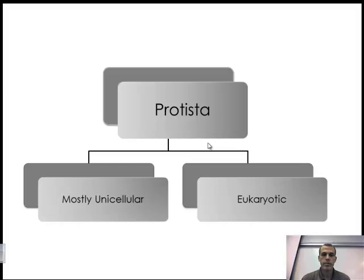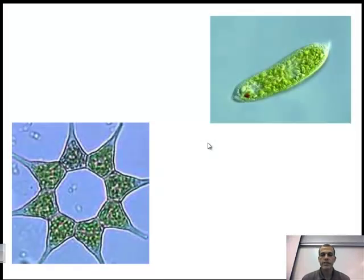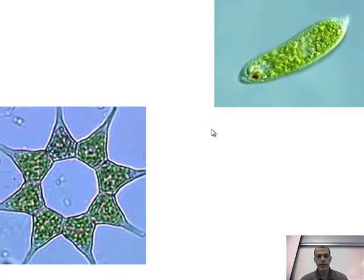The second kingdom is Protista. These are mostly unicellular and they are eukaryotic, meaning they do have a defined nucleus that contains the DNA. You can see some examples here — amoebas and paramecia fall under this particular kingdom of protists.